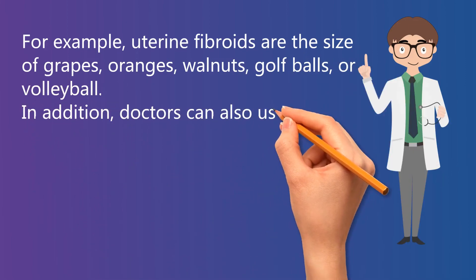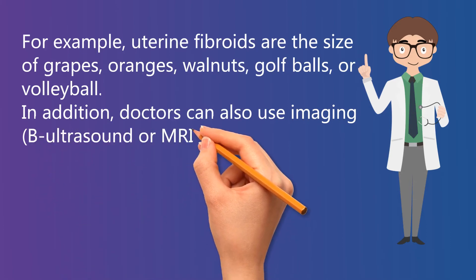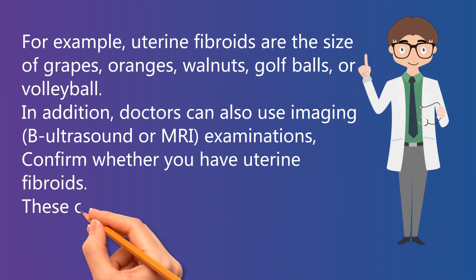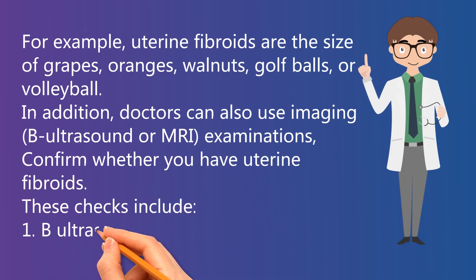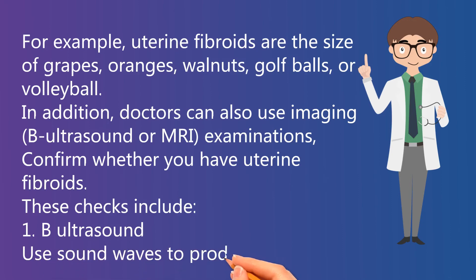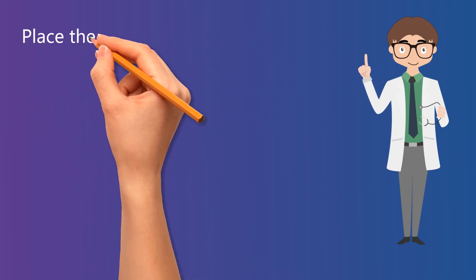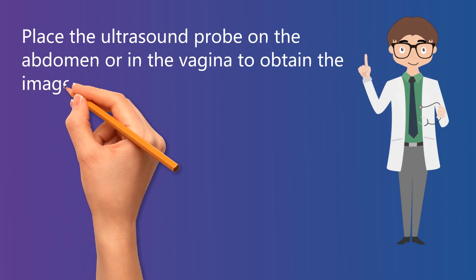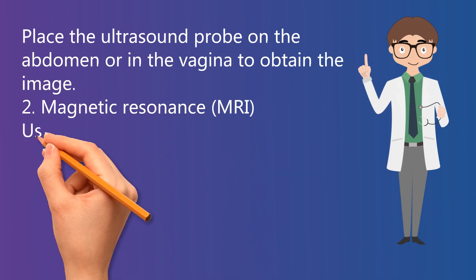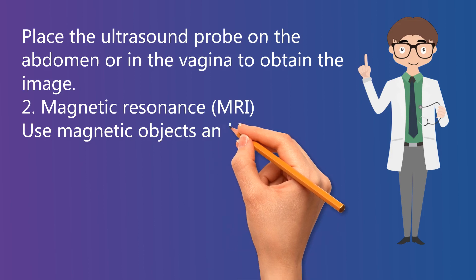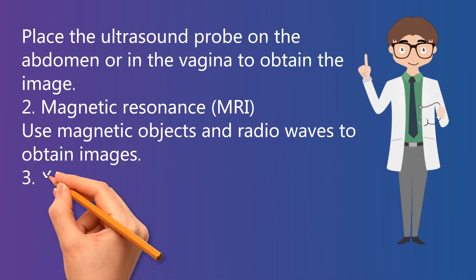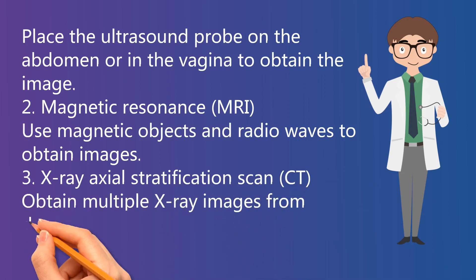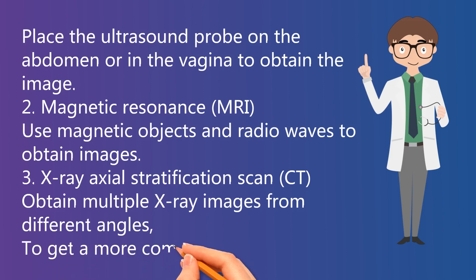In addition, doctors can also use imaging — ultrasound or MRI examinations — to confirm whether you have uterine fibroids. These checks include: 1. Ultrasound, which uses sound waves to produce images, with the probe placed on the abdomen or in the vagina. 2. Magnetic resonance imaging (MRI), which uses magnetic fields and radio waves to obtain images. 3. CT scan, which obtains multiple X-ray images from different angles to get a more complete image.